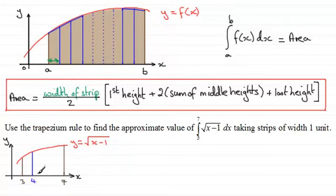So I need to split this up into strips of width 1 unit. So the next one's going to be at x equals 4, and then we've got 5, and then we've got 6, and then 7. And so we're going to join these with straight lines to make the trapeziums.